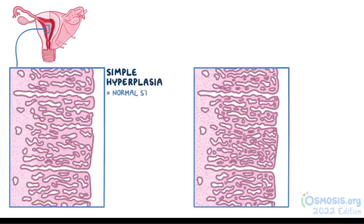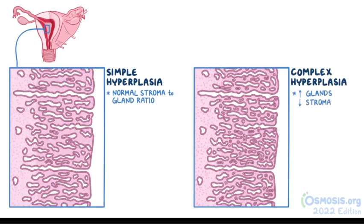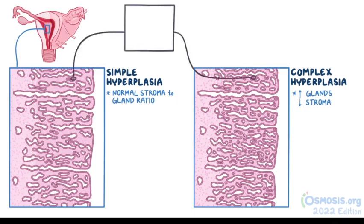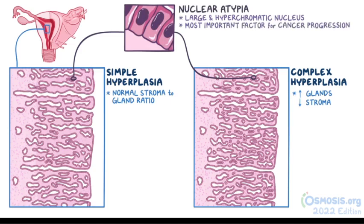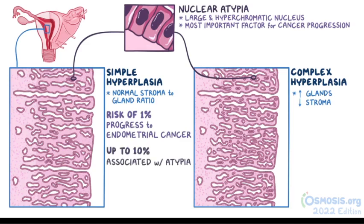In complex hyperplasia there are far more glands and less stroma, making it more at risk of progression to cancer. Zooming in further, glandular cell nuclei can appear normal or larger and hyperchromatic — darker — which are abnormal nuclear features called nuclear atypia, the most important factor for cancer progression. Simple hyperplasia alone has a 1% risk of progressing to cancer, rising to 10% with atypia; complex hyperplasia carries a 5% risk alone, but 30% with atypia.